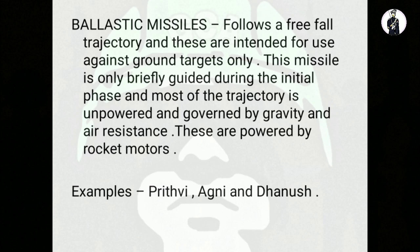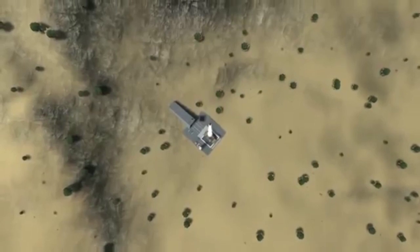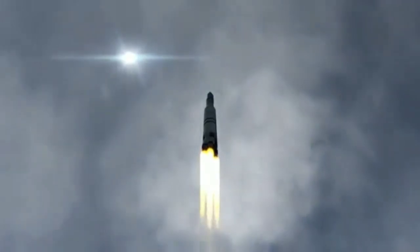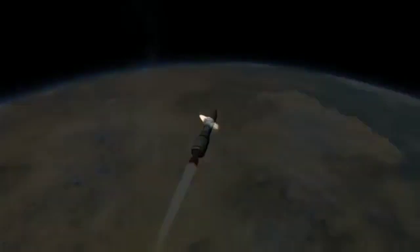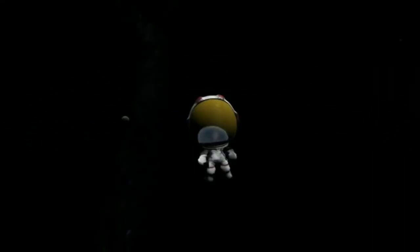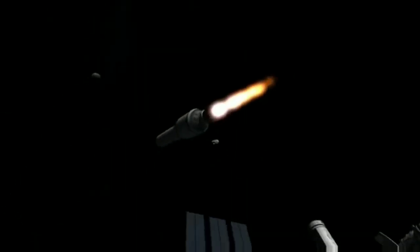Talking about ballistic missiles first — ballistic missiles follow a free-fall trajectory, also called the ballistic trajectory, and these are mainly used for ground targets. A ballistic missile is only initially powered. There are different phases during the course of a missile: the initial phase, the mid-course phase, and the final phase, which is the terminal phase. During the initial phase, they are powered by rocket motors which use different kinds of fuels like liquid propellant or solid fuel.